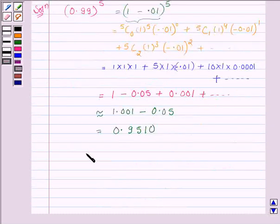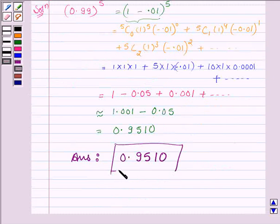Thus on approximating 0.99 raised to the power 5, our answer is 0.9510. This completes the session. Take care and have a good day. Thank you.